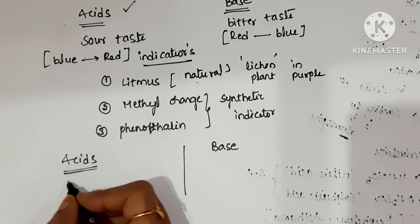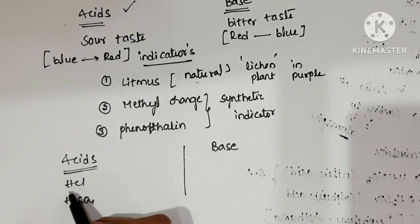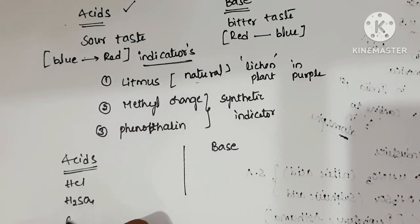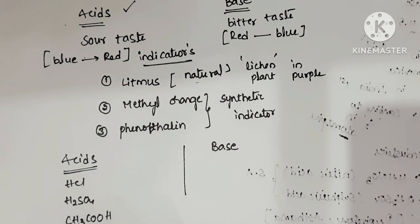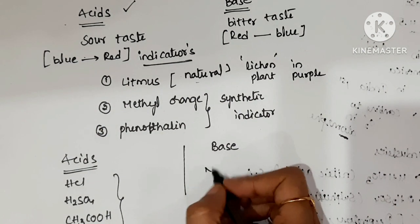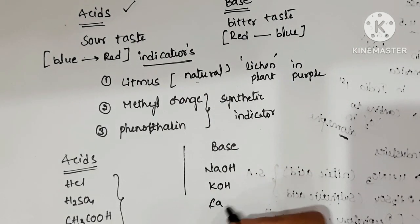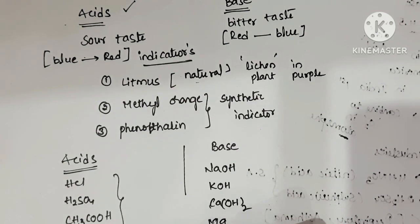Examples of acids include HCl (hydrochloric acid), H2SO4 (sulfuric acid), acetic acid, and nitric acid. Examples of bases include sodium hydroxide, potassium hydroxide, calcium hydroxide, and magnesium hydroxide.